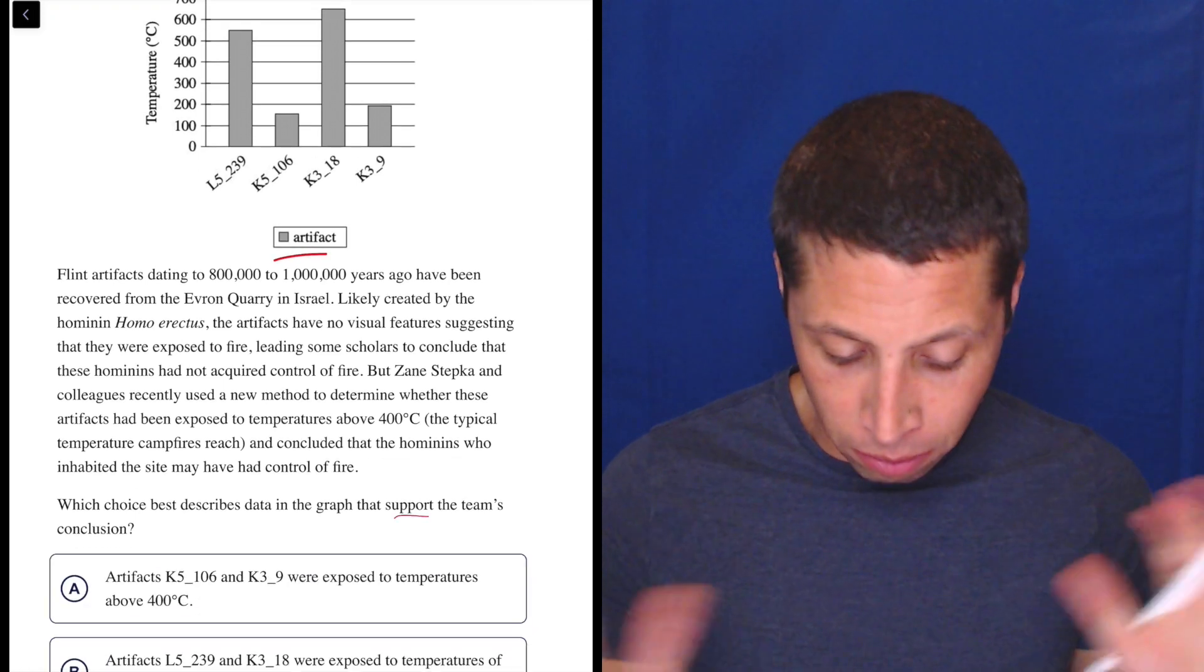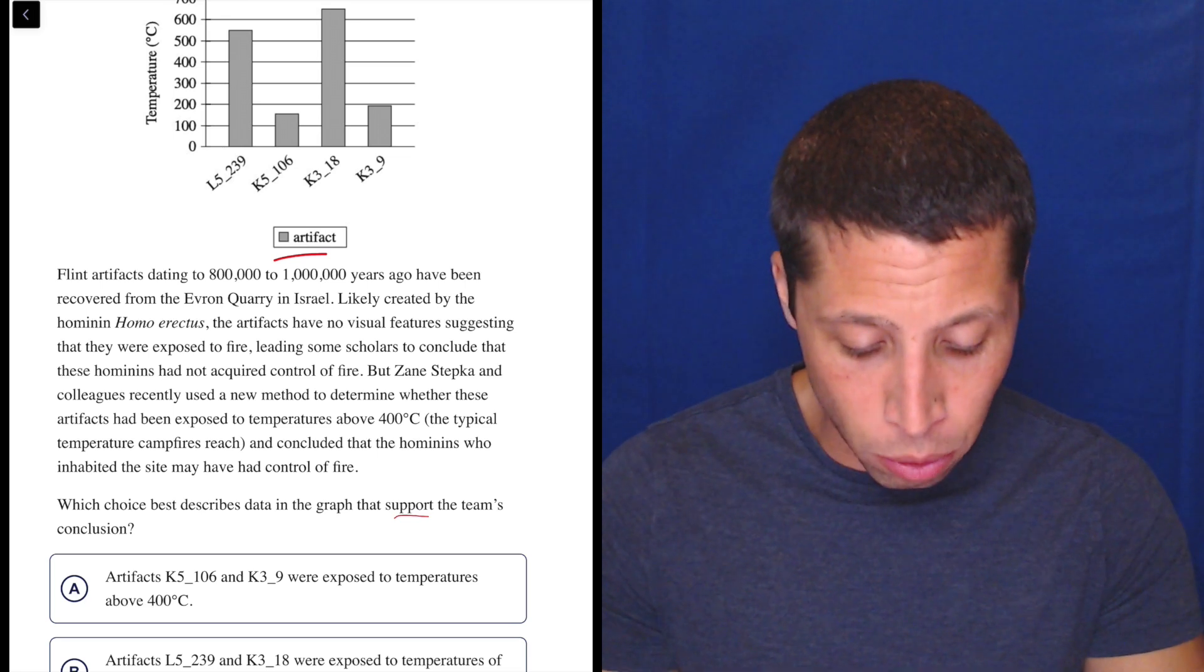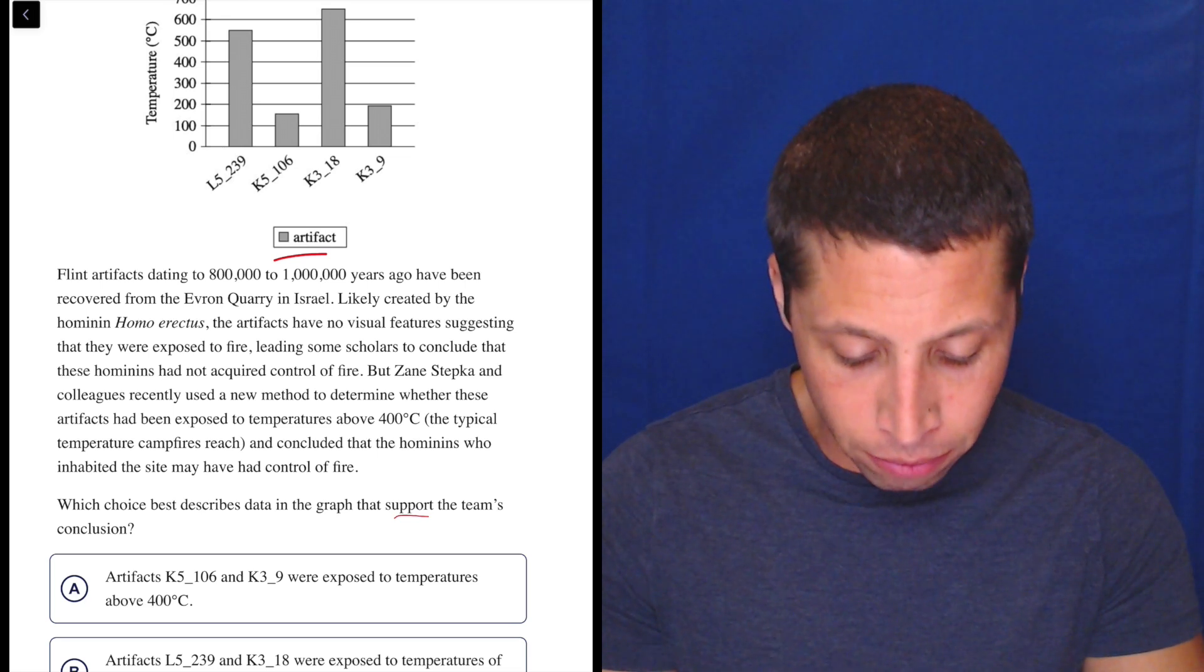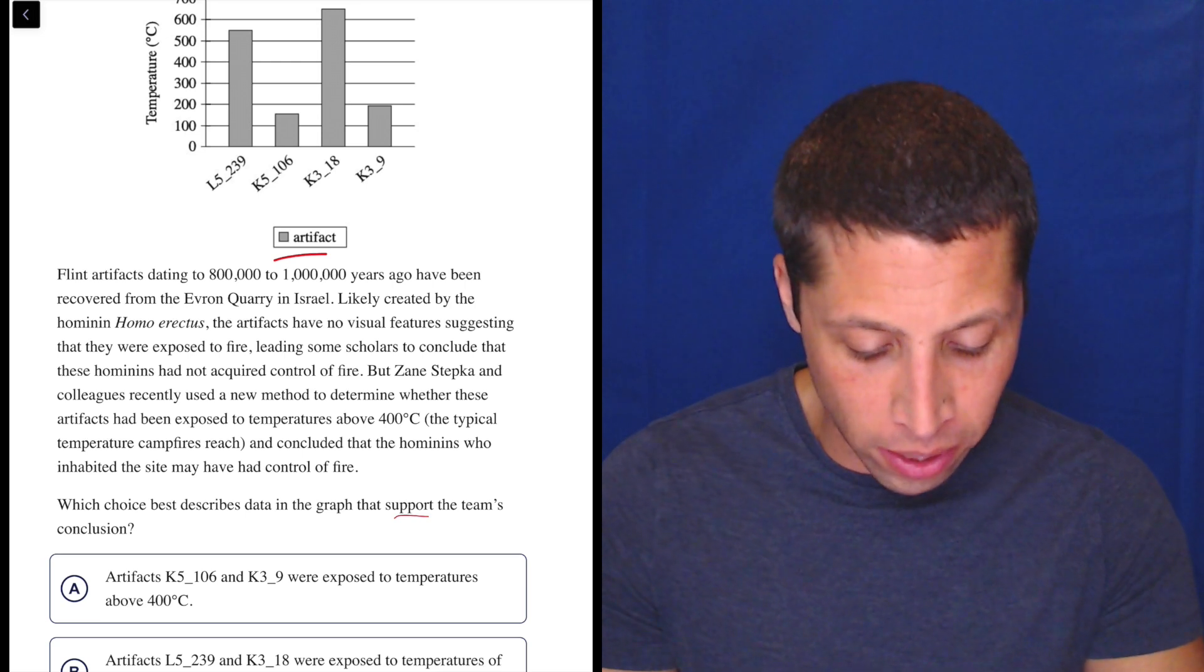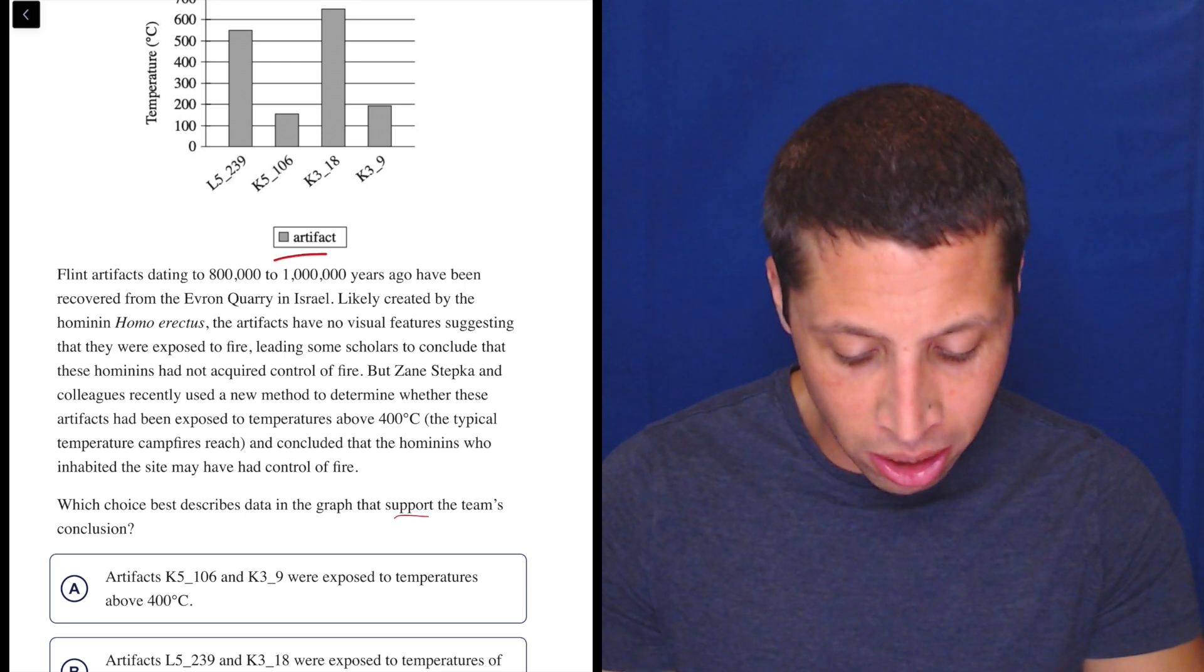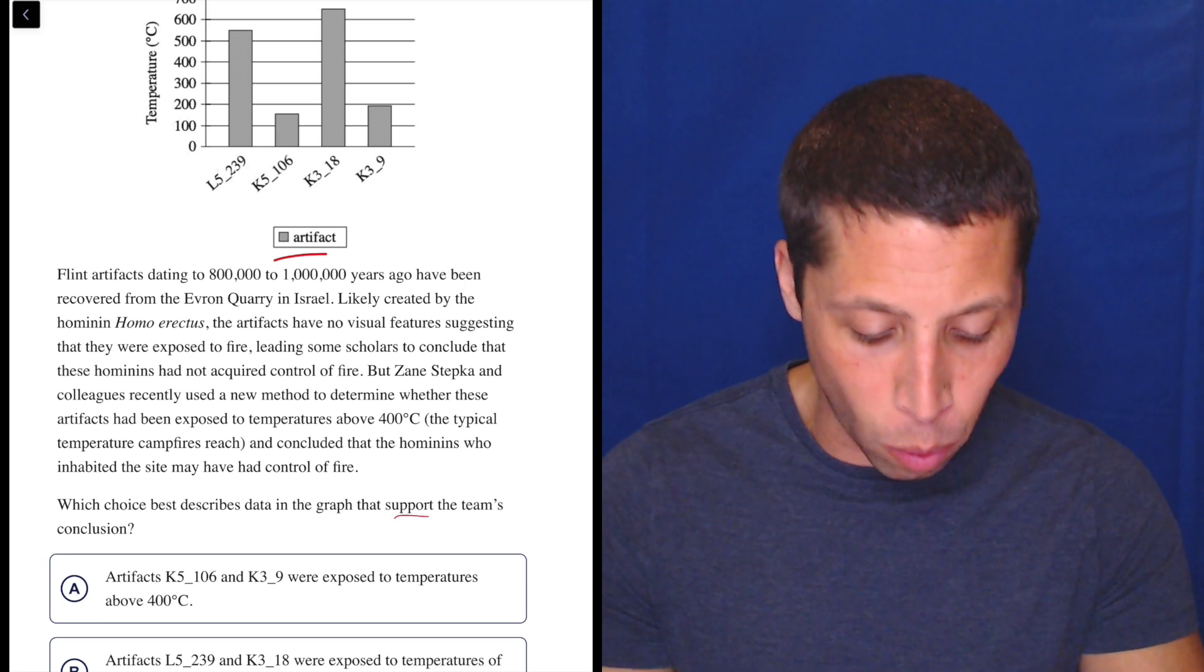We have to support their conclusion. Let's focus on the conclusion. Flint artifacts dating to 800,000 to a million years ago have been recovered from the Evron Quarry in Israel. Likely created by the hominin Homo erectus, the artifacts have no visual features suggesting that they were exposed to fire, leading some scholars to conclude that these hominins had not acquired control of fire.